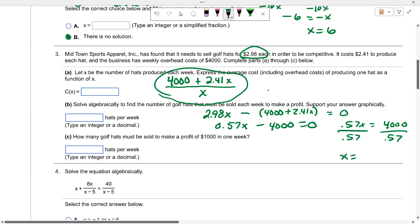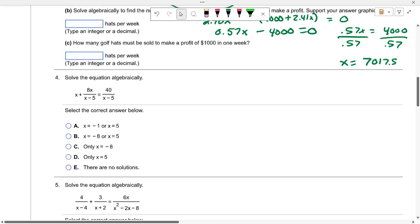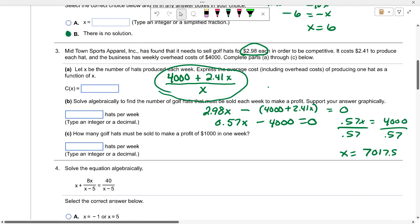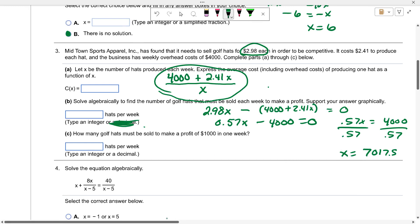If we divide by 0.57, what's $4000 divided by 0.57? It's a pretty big number. They want 7018 because it says integer or decimal. It should be round up to the nearest hat, so it should be 7018 hats per week.